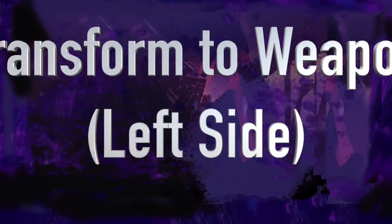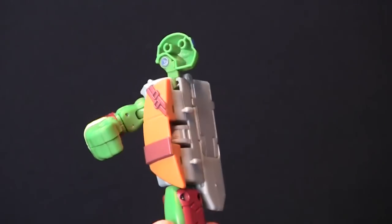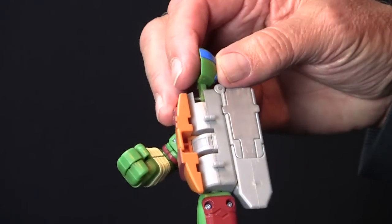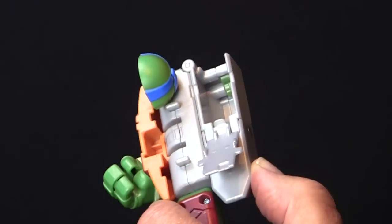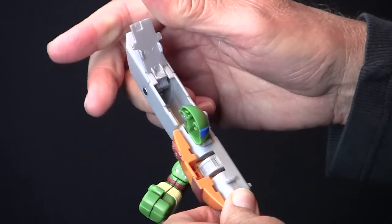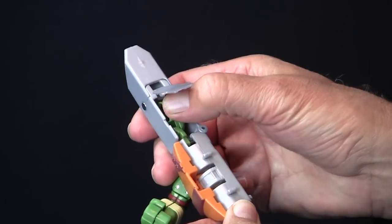Now, do the same for the left side. Push Leo's head forward and down. Open the compartment and lift it into place. Swivel Leo's head inside and snap shut.